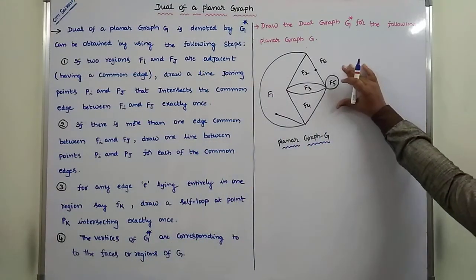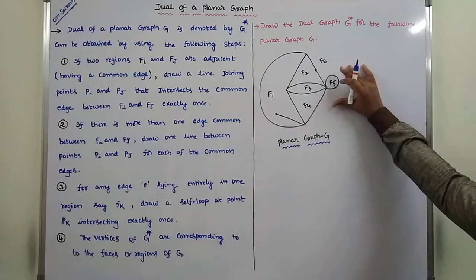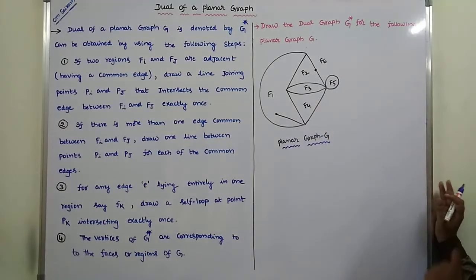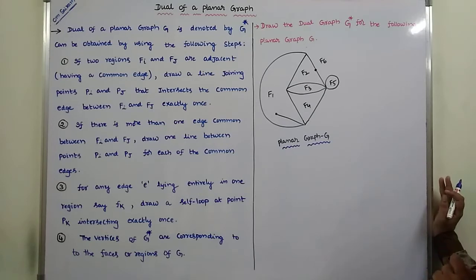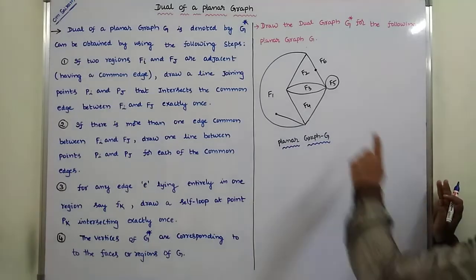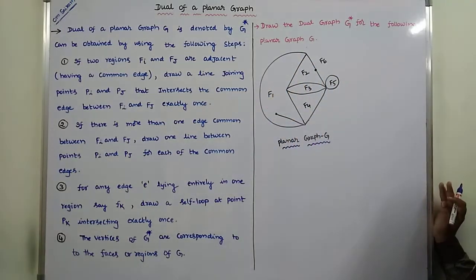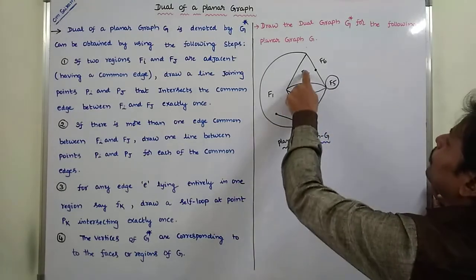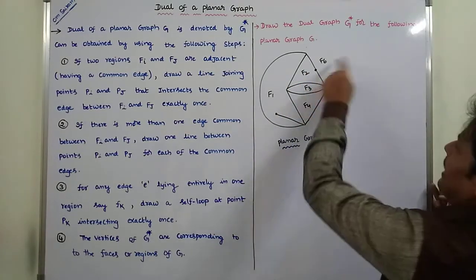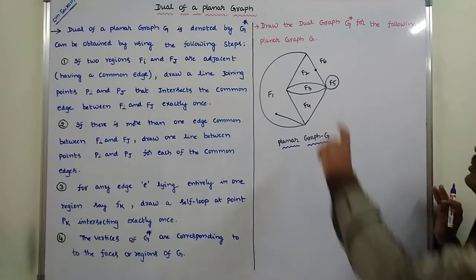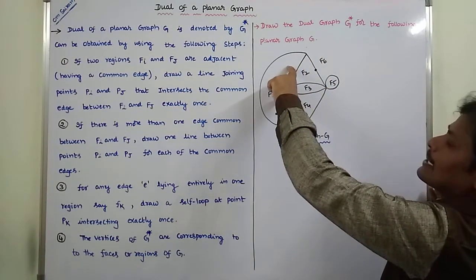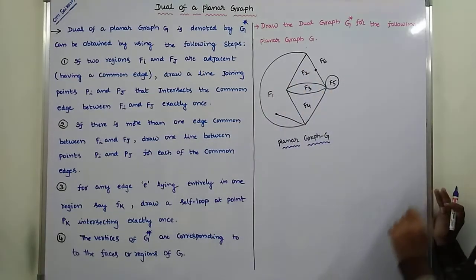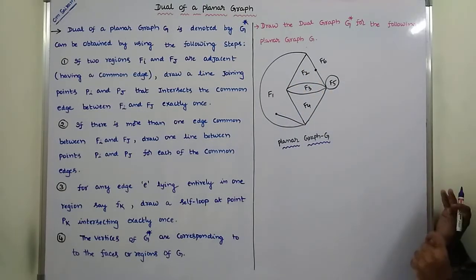This is the given planar graph. For that graph, we have to draw G star. G star is nothing but the dual of planar graph G. The first point is: how many number of regions are there? So, 1, 2, 3, 4, 5, 6 — 6 regions are there. The number of regions in planar graph G corresponds to the number of vertices in G star.